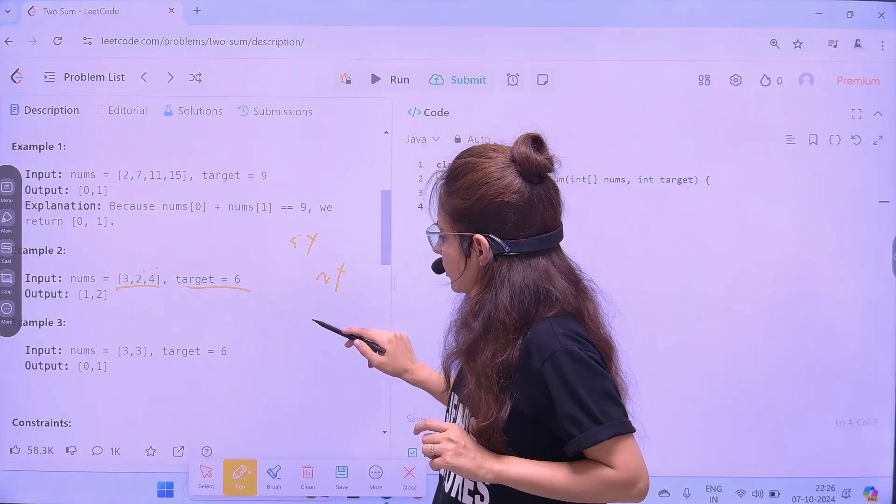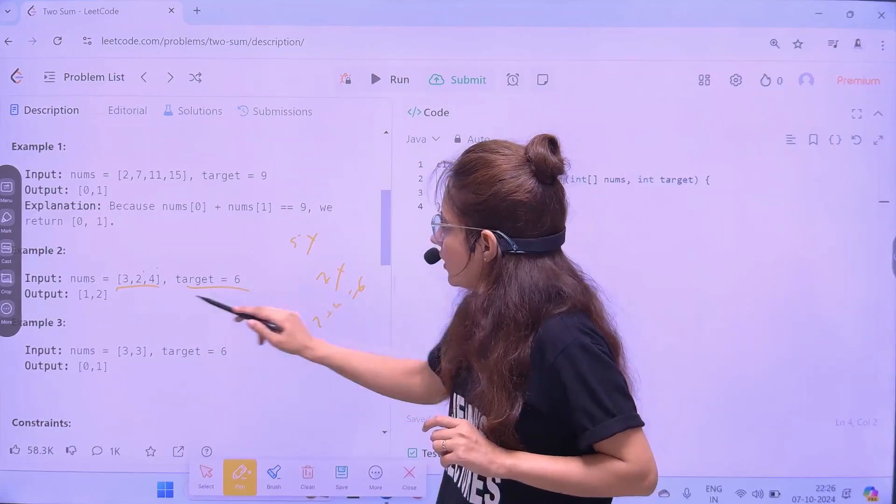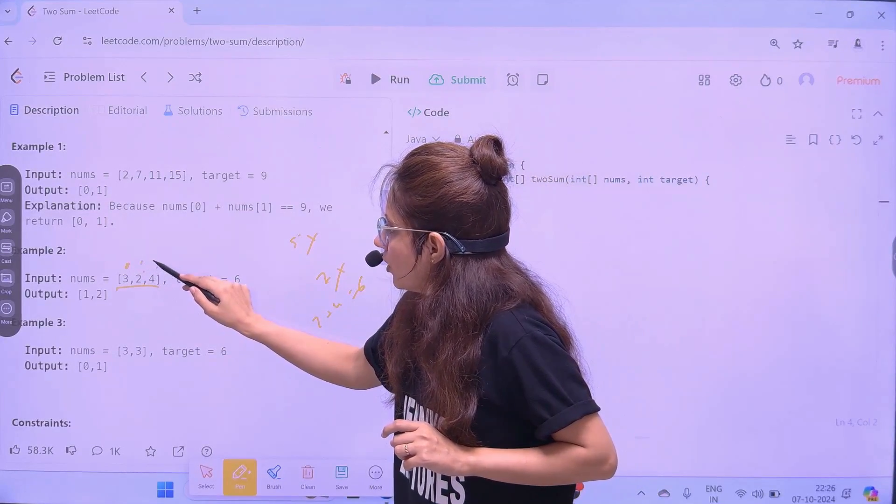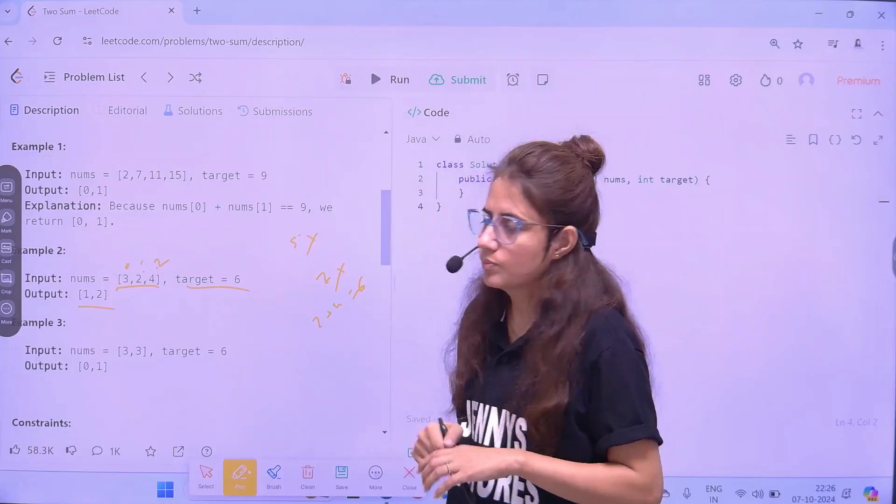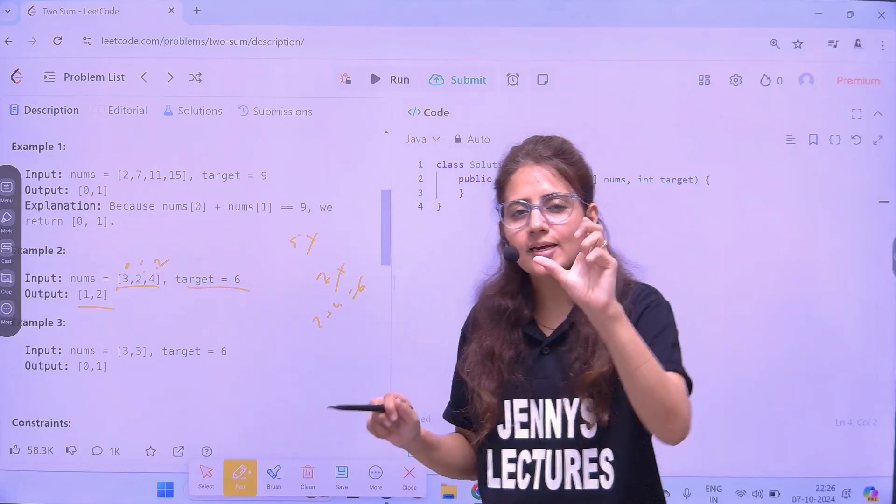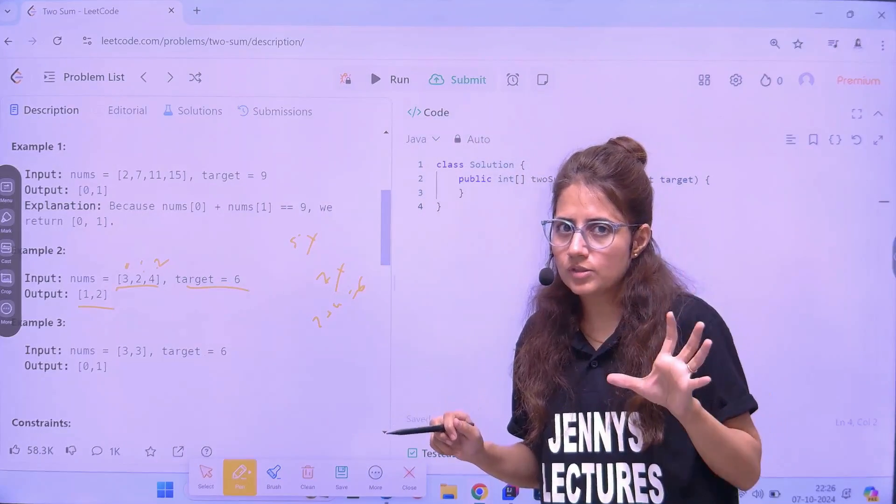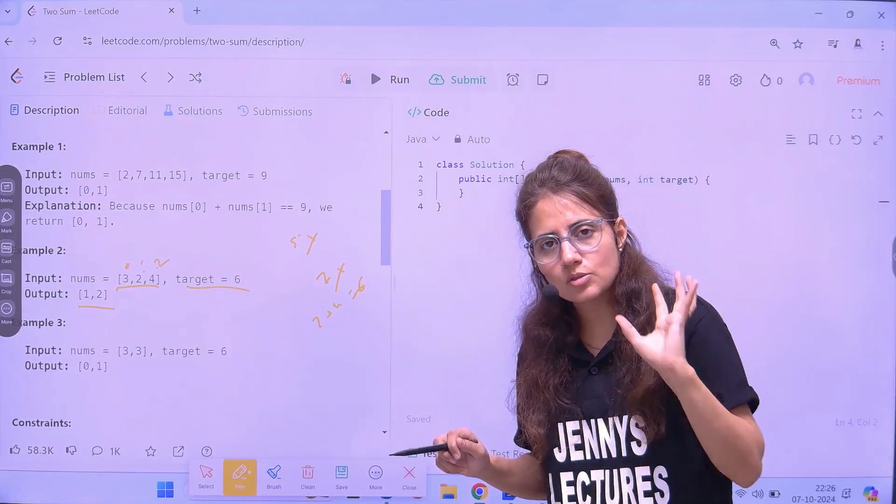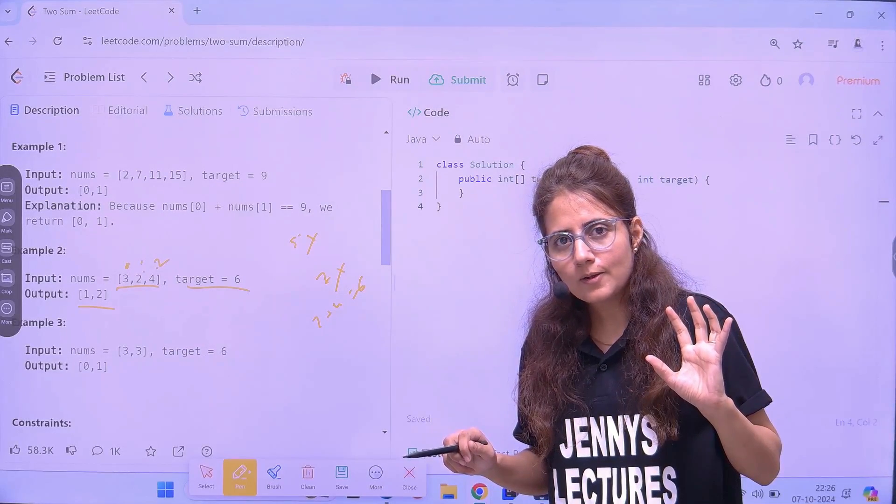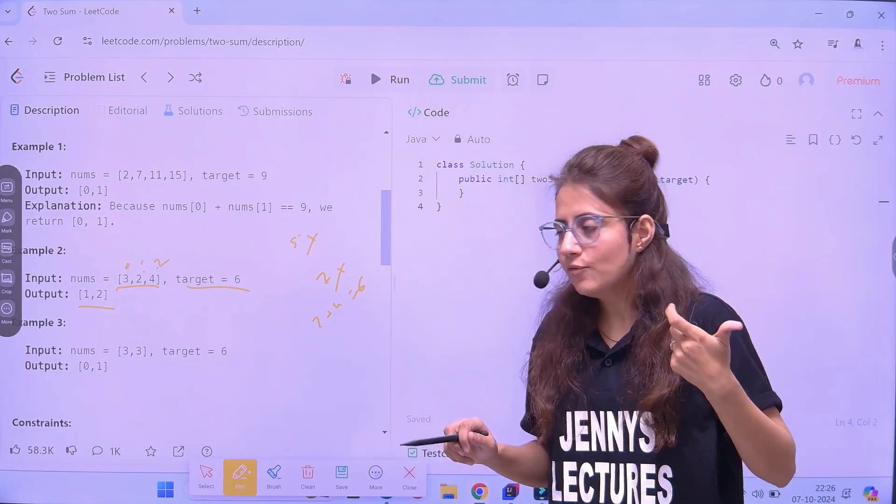Now, 2 plus 4. Yeah. 2 plus 4 is 6. So, it will return indexes 0, 1, 2, 1 and 2. And, every input will have exactly one solution. We will assume this thing. So, once you find your solution, just stop.